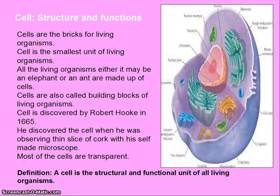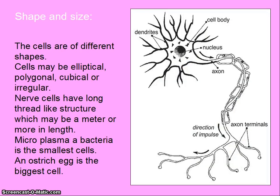Shape and size of the cell. The cells are of different shapes. Cells may be elliptical, polygonal, cubical, or irregular. Nerve cells have long thread-like structures which may be a meter or more in length. Mycoplasma is a bacterial cell that is the smallest cell. An ostrich egg is the biggest cell that we can see with the naked eye.